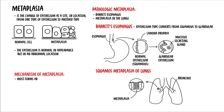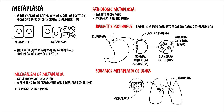Most forms of metaplasia are reversible if the stimulus is removed, whereas a few, such as Barrett's esophagus, tend to be permanent once established. Metaplasia can progress to dysplasia. Dysplasia is not a true cellular adaptive response — it is where cells divide and become abnormal in structure and function, and it may progress to become cancerous.